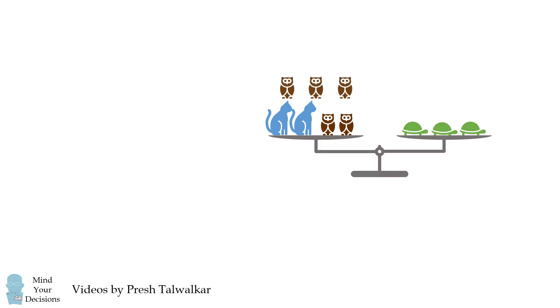Now we will add the weight of three owls to both sides of the balance. Since we're adding the same weight to both sides, it doesn't affect the balance.